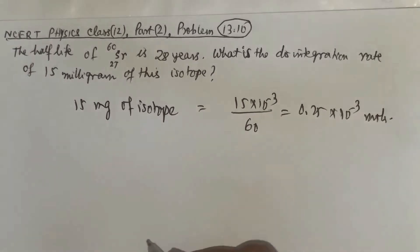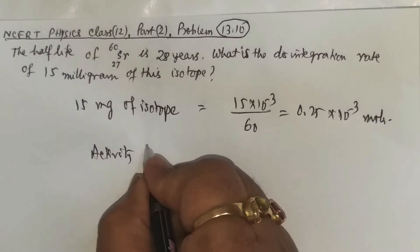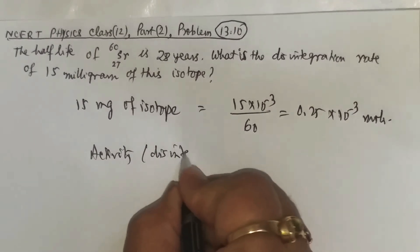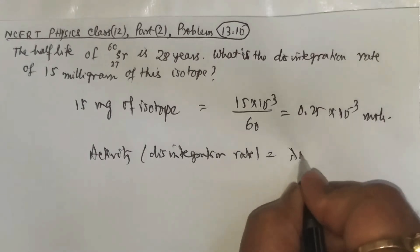Now half-life is 28 years. So what is activity? Activity, that is disintegration rate, it will be equal to lambda into n.